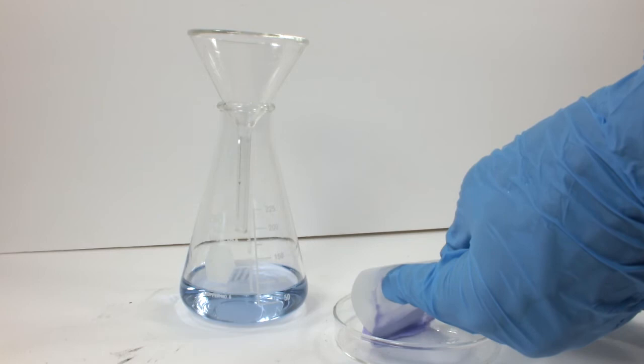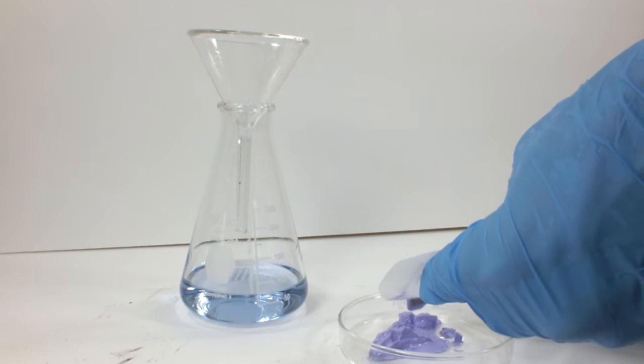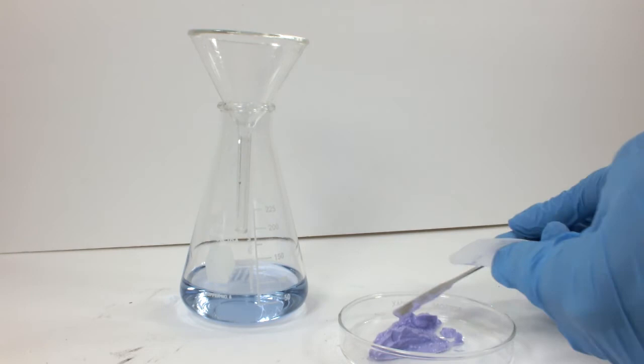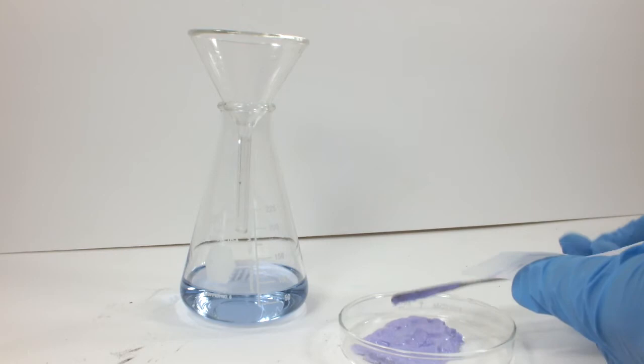The same as with the sulfate complex, I'm going to scrape the wet solid onto a glass dish for drying. Look at that color. Most nickel compounds are some shade of green, and here I've just made two that aren't. That's pretty cool all by itself. Let's see what they look like dry.